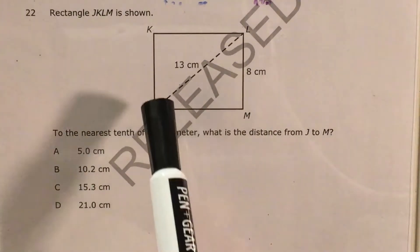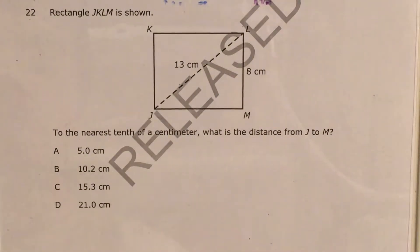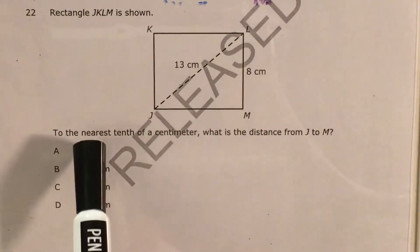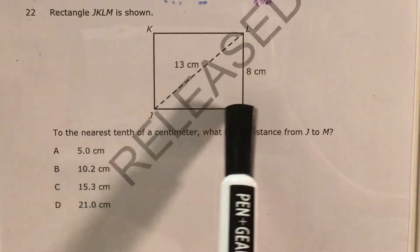The question shows us rectangle J, K, L, M. So any shape is going to be named by its points. And we're supposed to figure out to the nearest tenth of a centimeter what is the distance from J to M.